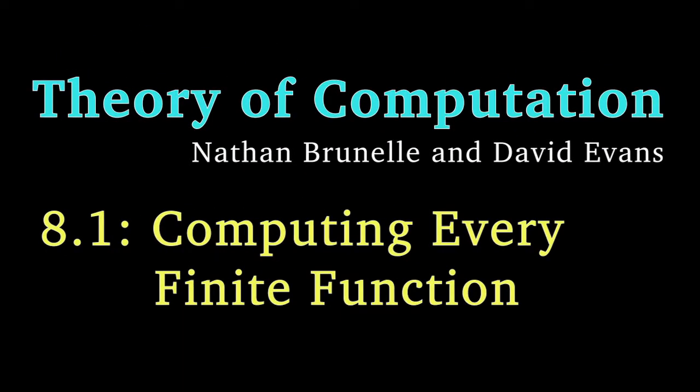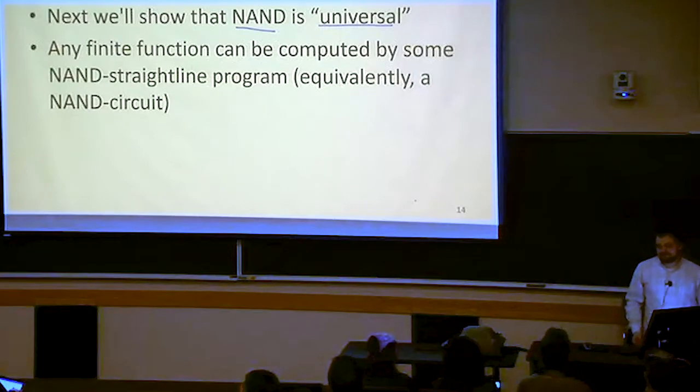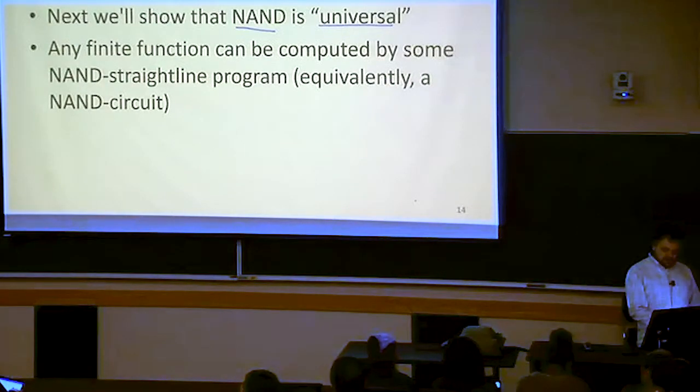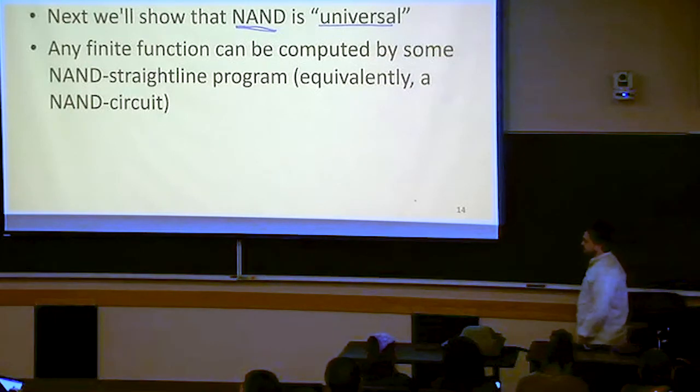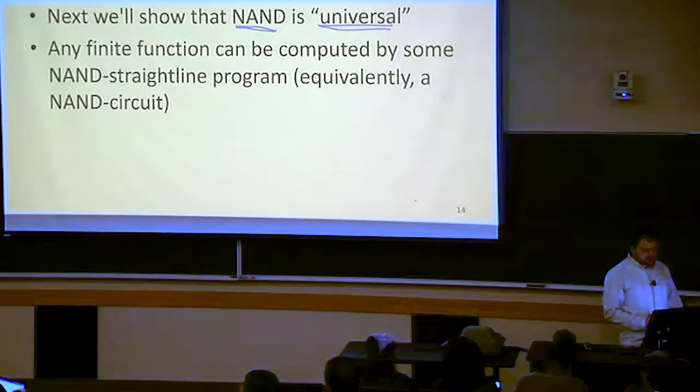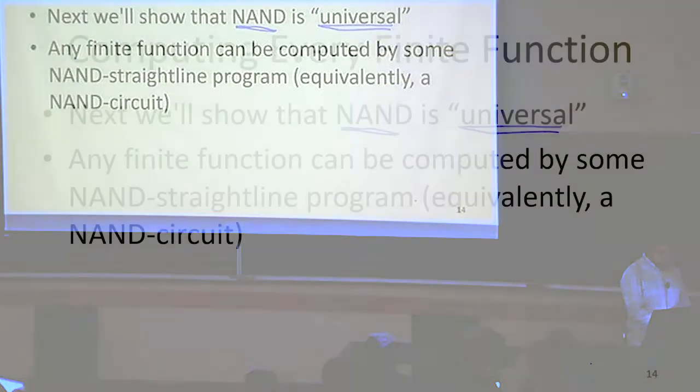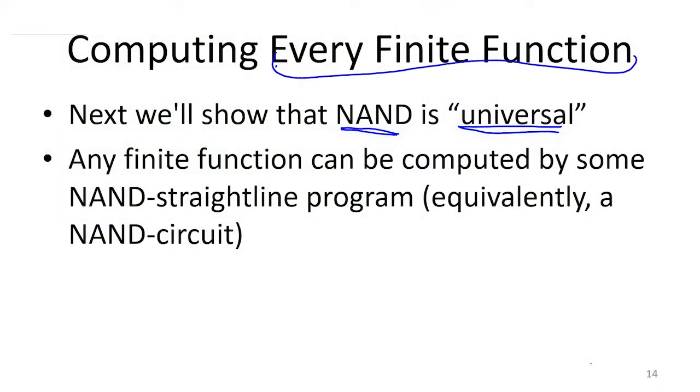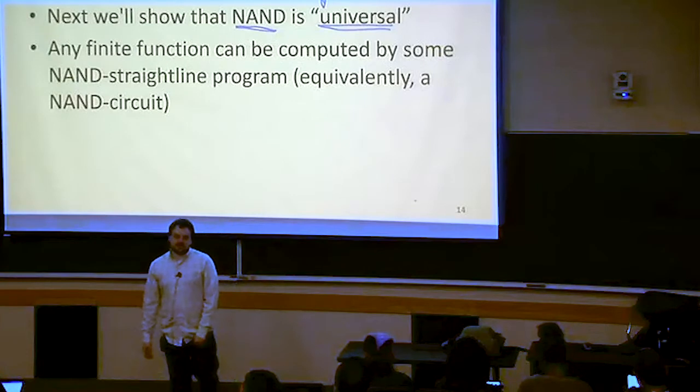So we want to show that in some sense, NAND is universal. The things that we can do with just NAND straight line or NAND circuits, and in particular, we're going to show that this is something that we're going to call universal, which means that we're going to be able to do every finite function here. So when we say universal in this context, we mean every finite function. So we're going to show that any finite function you could ever come up with, we can make a circuit that's going to do that.